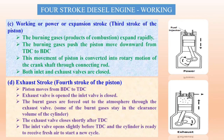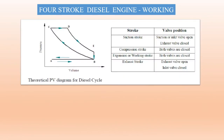In the diesel cycle PV diagram: A to B is the suction stroke at constant pressure; B to C is the compression stroke; C to D is constant pressure heat addition, where fuel injector sprays fuel; D to E is the expansion stroke, also called isentropic or reversible adiabatic expansion; and E to B is constant volume heat rejection. The key difference between the Otto cycle and diesel cycle is that heat addition is at constant volume in the Otto cycle but at constant pressure in the diesel cycle. Constant volume heat rejection is the same in both cycles.